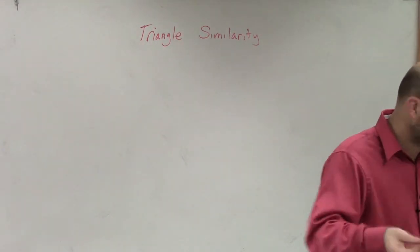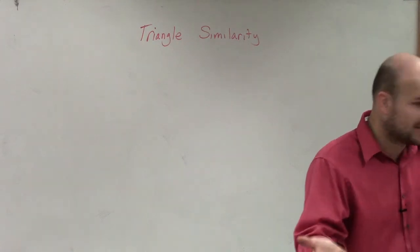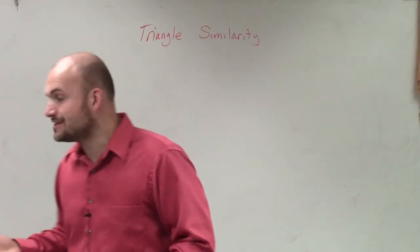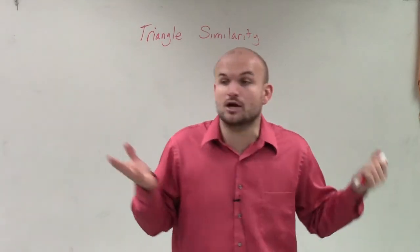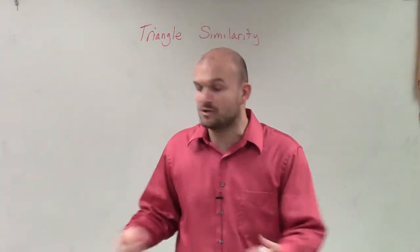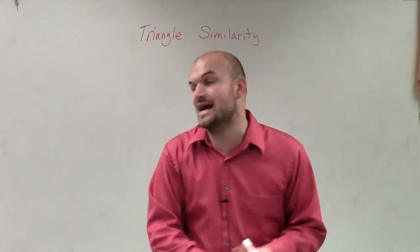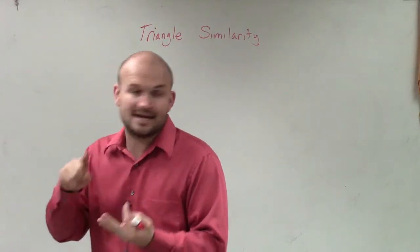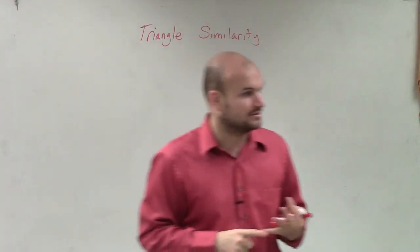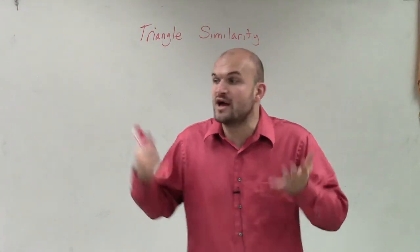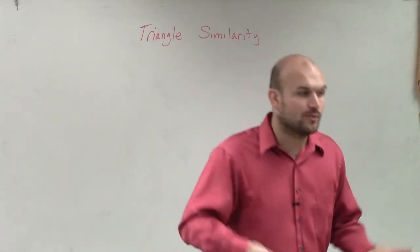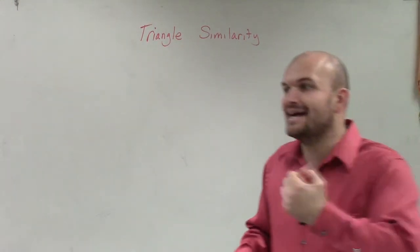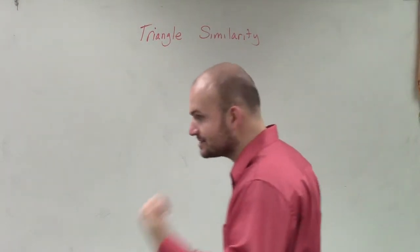Remember we wrote proofs, said this was equal to this, this was equal to that. And then we could say at the end, yeah, these two triangles are congruent by our congruency statement, which was side-side-side, angle-side-angle, angle-angle-side, and HL. Those are all ways we could show that one triangle was congruent to another, meaning exactly the same shape and exactly the same size.